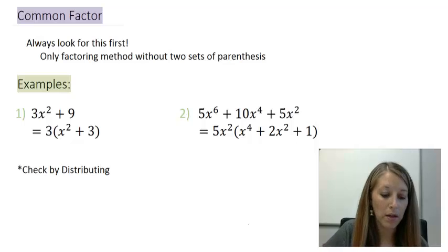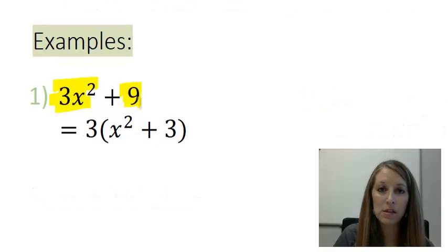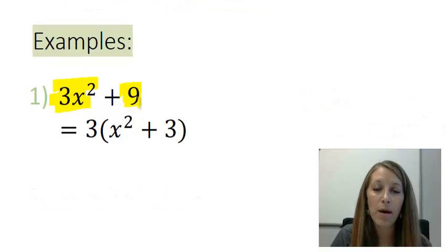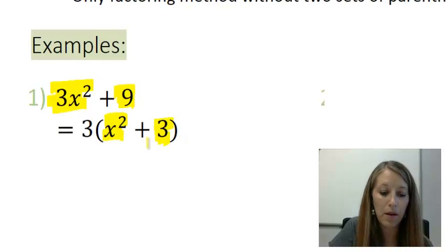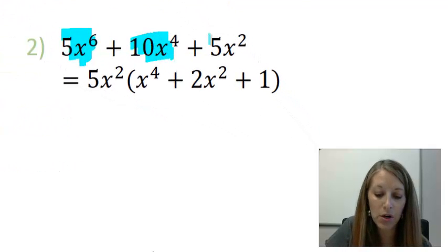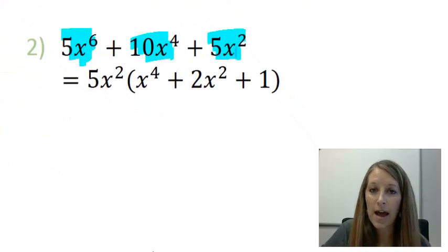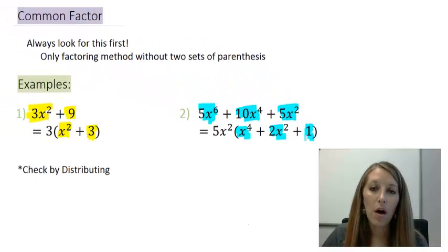In example one, notice I have two terms separated by the plus sign. So when I factored out my common factor of three, I'm left with two terms. And in my second example, I have three terms. When I factored out my common factor, I'm left with three terms.